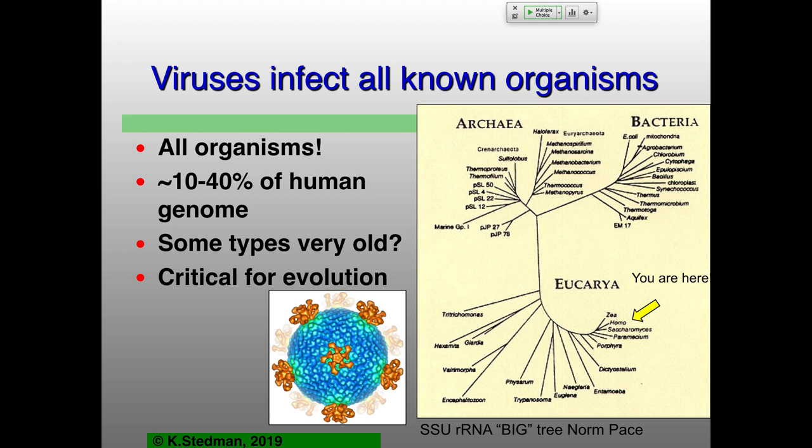About 95% of all viruses that people have studied are associated with animals. The other 5% are almost all those that infect E. coli. But there are massive numbers of viruses infecting all of these different kinds of things. Between 10 and 40% of our genome is viral, depending on how you define it — we'll look at that a little bit later on.